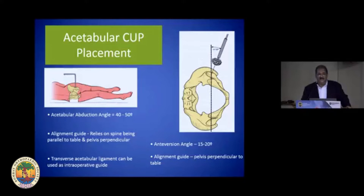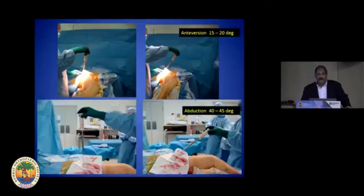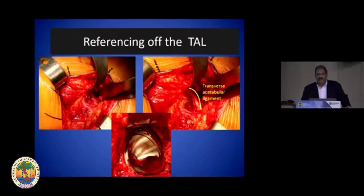The positioning of the acetabular cup is critical and we have to restore the version as well as the inclination. Patient positioning is crucial — whichever approach you choose, posterior, anterolateral, Hardinge, whatever. Looking at the patient from the bottom end is where you set the anteversion, which is 15 to 20 degrees, while looking at the patient from the back is how you fix the inclination or abduction — 40 to 45 degrees.